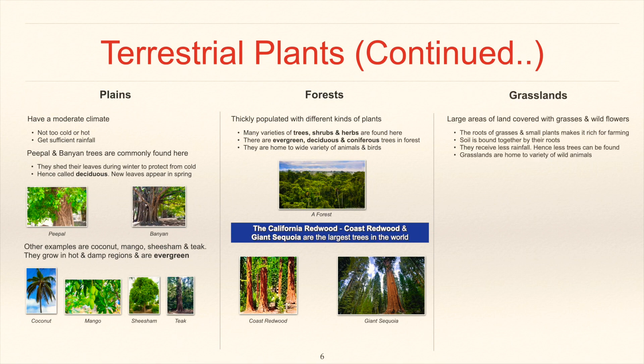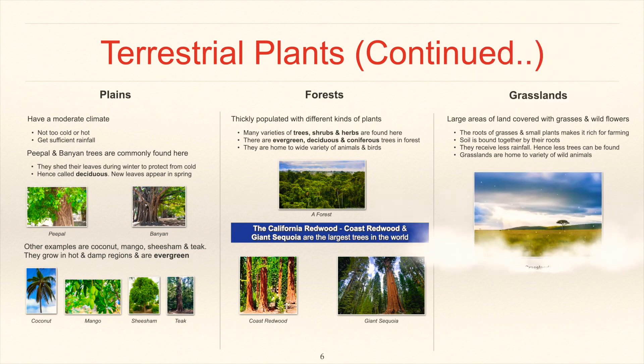Grasslands are large areas of land covered with grasses and wildflowers. The roots of grasses and small plants make it rich for farming. Soil is bound together by their roots.